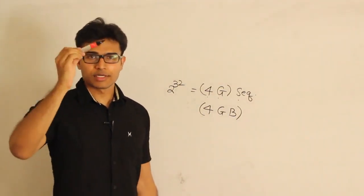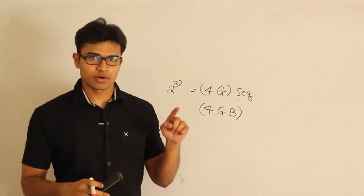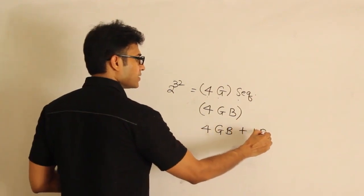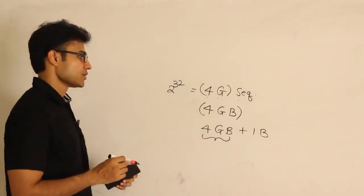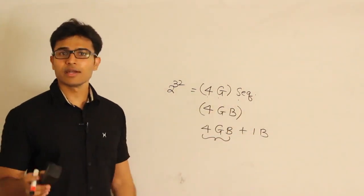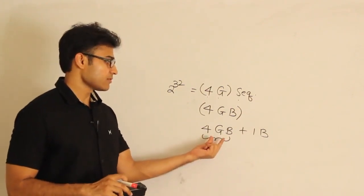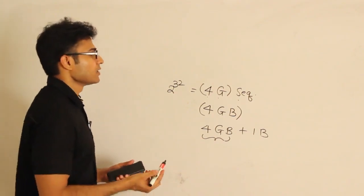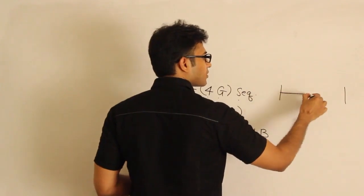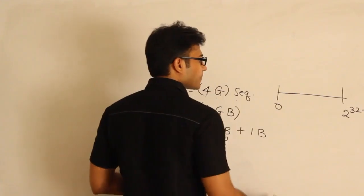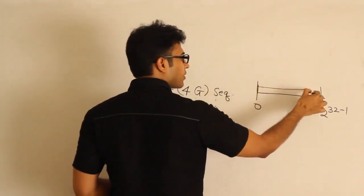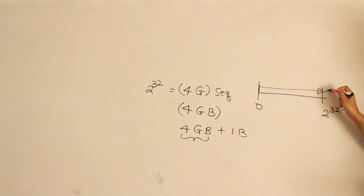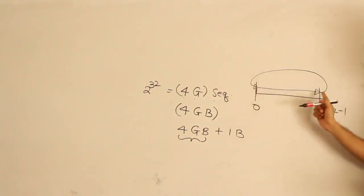But an application may give TCP more than 4GB of data. For example, if you are downloading a movie which is more than 4GB — say 4GB plus 1 byte. All 4GB bytes take one sequence number each, and then the extra byte also needs a sequence number. But you only have 4G sequence numbers. So you should wrap around and use the same number again. This is called wrapping around — the sequence numbers go from 0 to 2^32 minus 1 and then repeat.